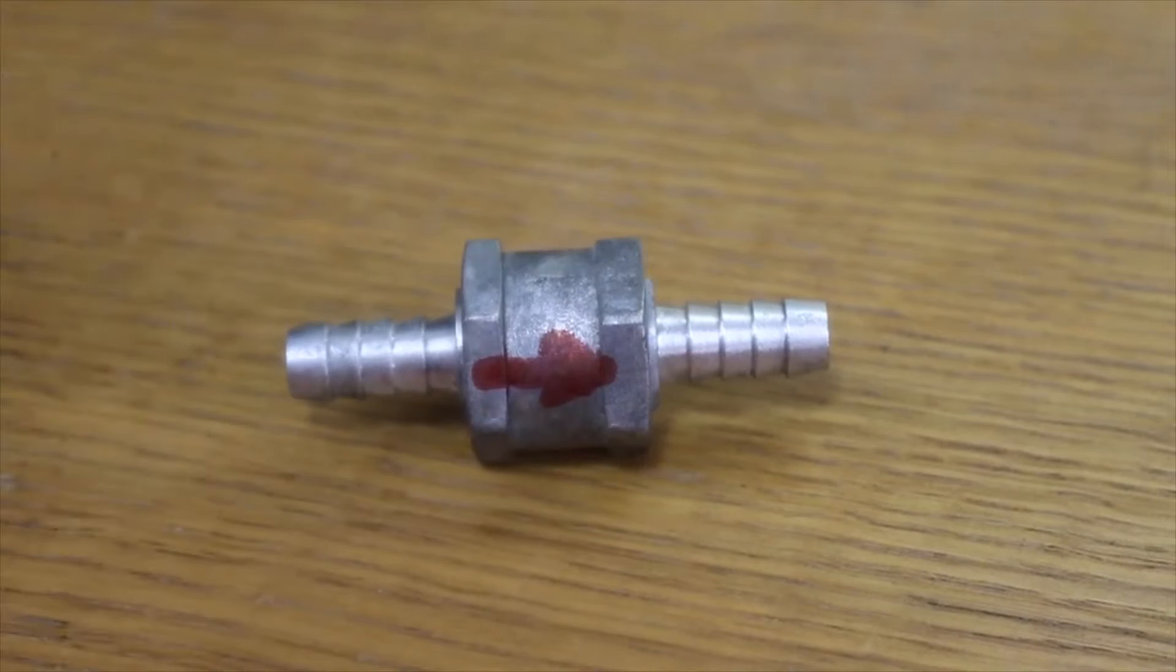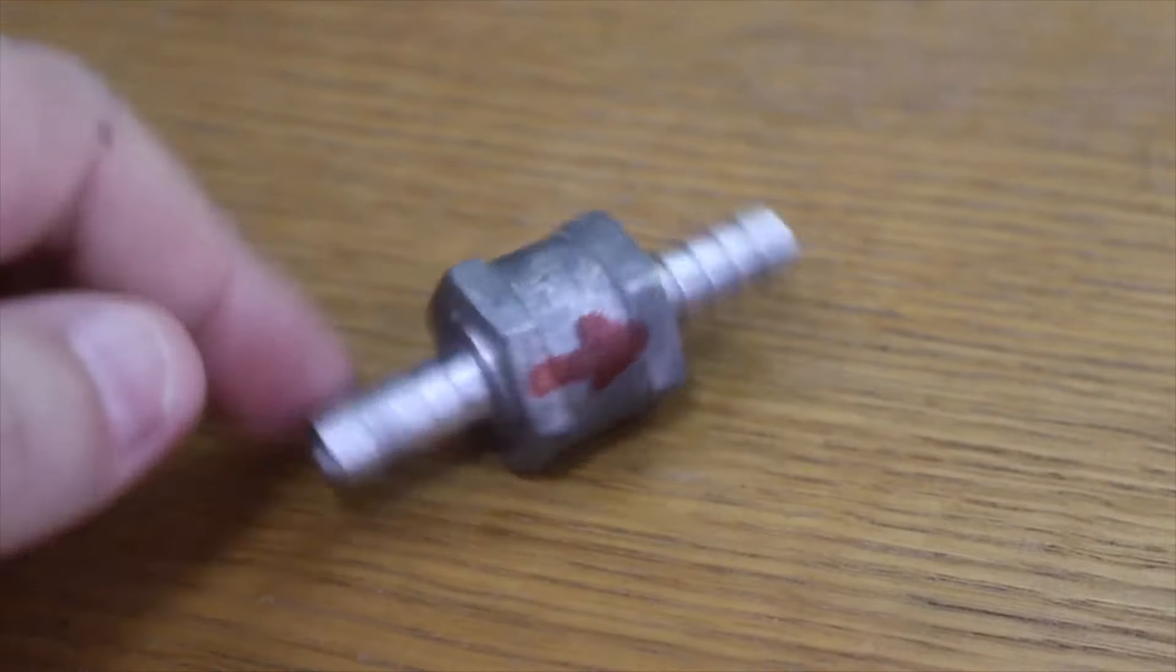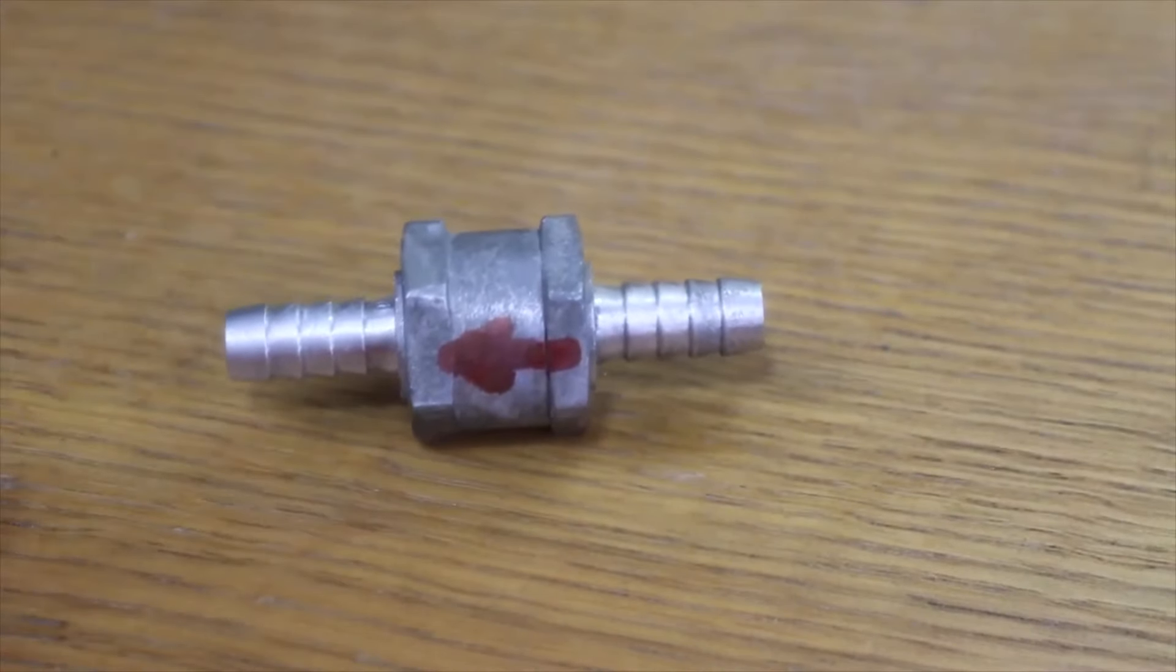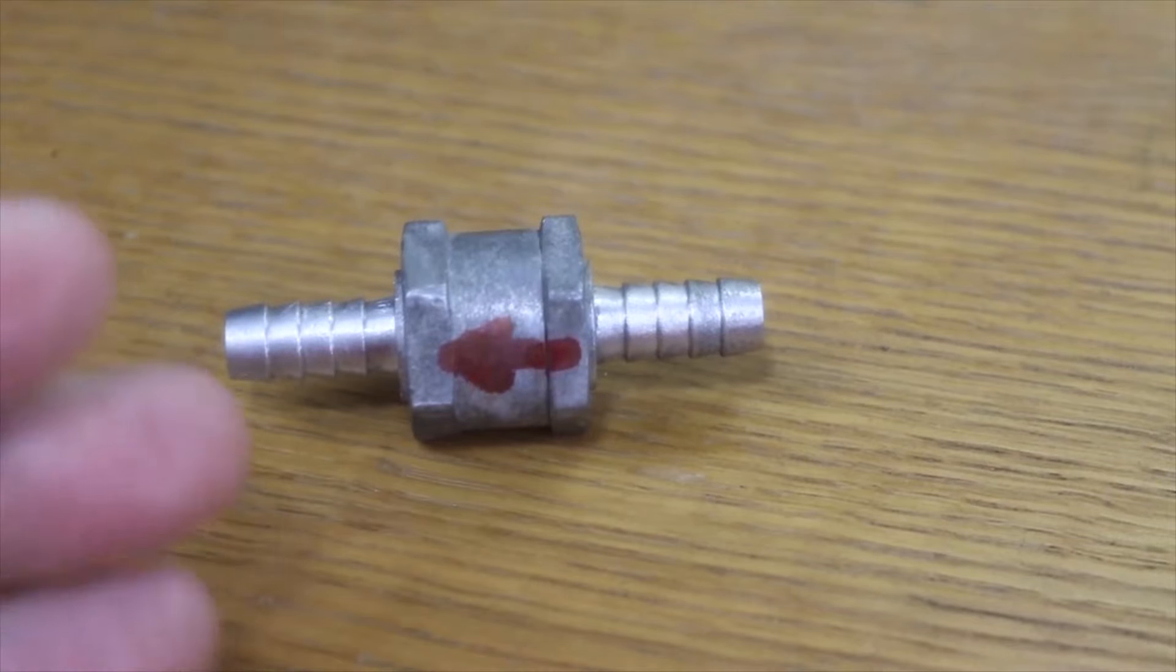There are some valves that even come without the arrow. To know the direction in which it allows the diesel to circulate, you would have to blow through one of the sides. You can only blow on one, and that's the direction in which it will circulate, or in which the diesel oil can circulate.